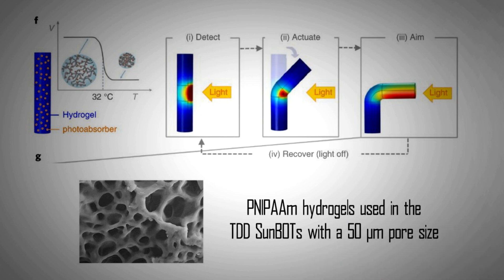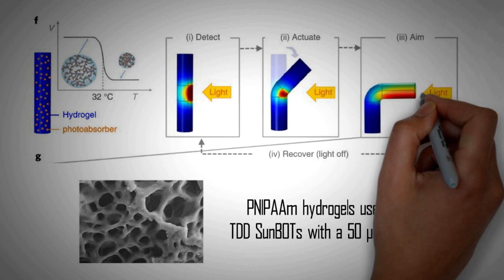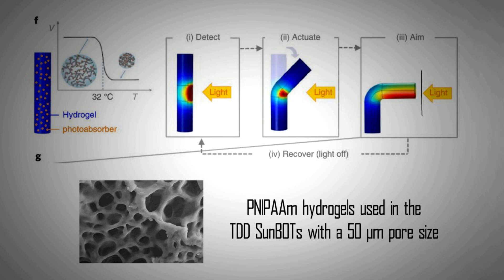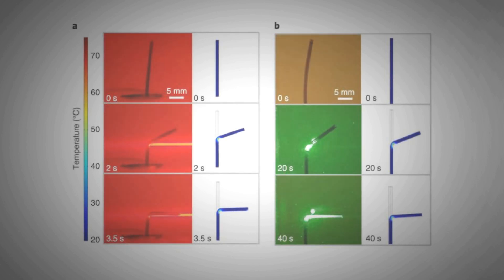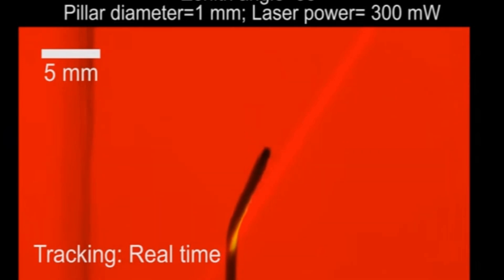More specifically, the hydrogel used inside the SunBOT shrinks with exposure to light. The shrinkage tilts the SunBOT further towards the incident light till the top face is completely perpendicular to it. At this point an equilibrium is reached and the movement stops.